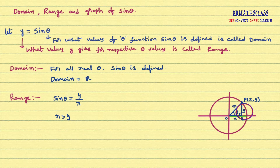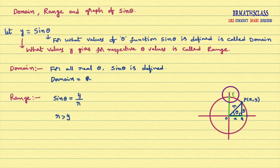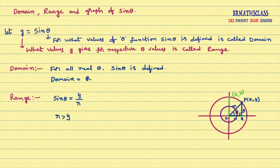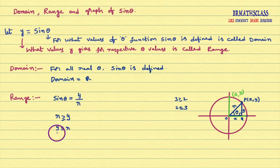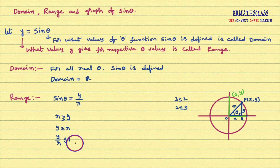Is there any chance that R equals Y? Yes, possibility is there. If we rotate the initial ray through 90 degrees, the point lies on the Y axis at 0 comma Y. This length is Y, and of course this is also the radius of the circle. That means there is a chance that R equals Y, so R is greater than or equal to Y, which means Y is less than or equal to R. Since R is positive, dividing both sides by R gives Y by R less than or equal to 1.